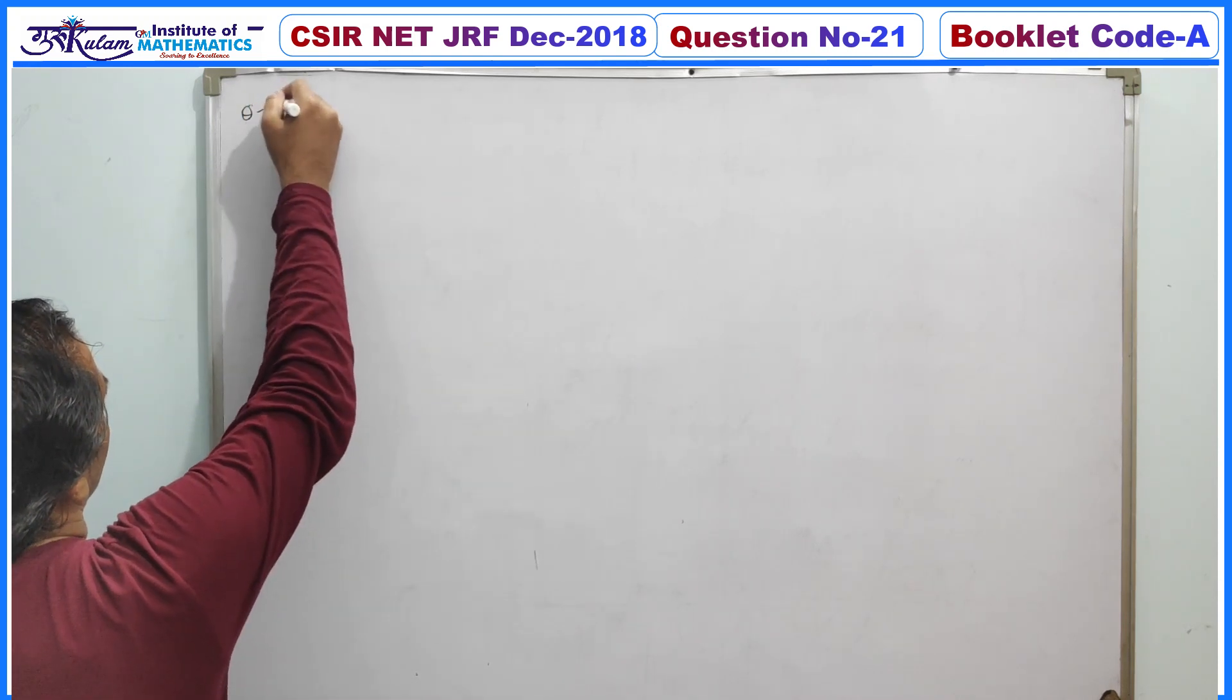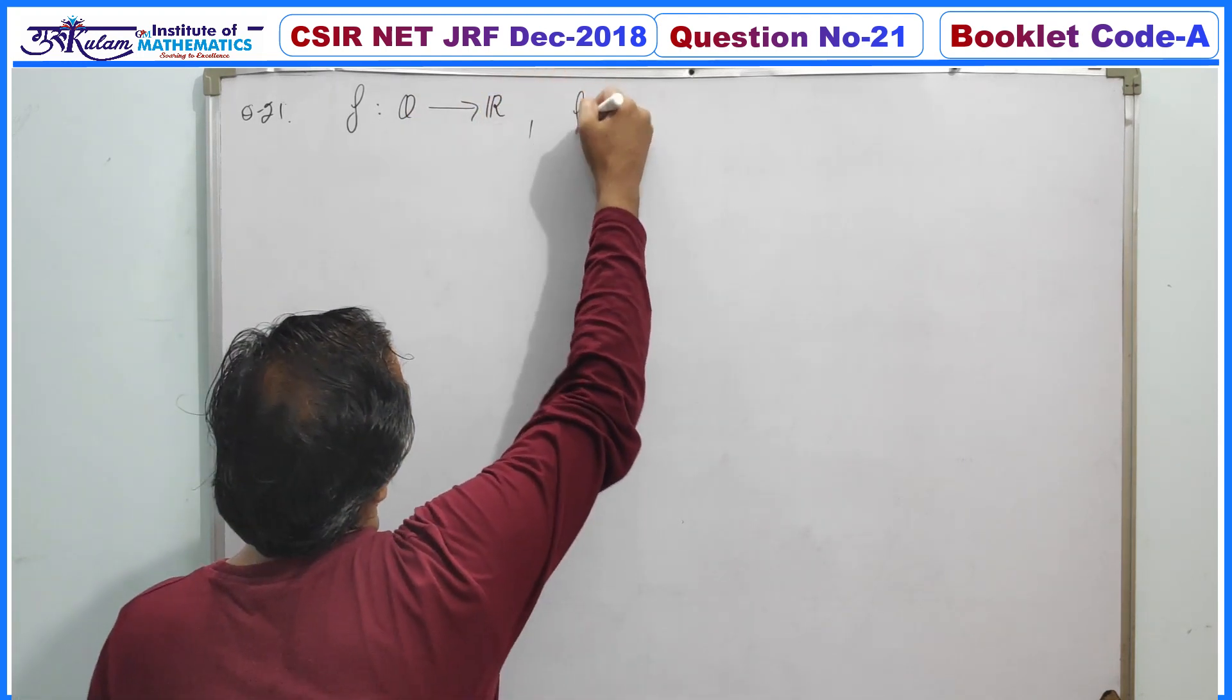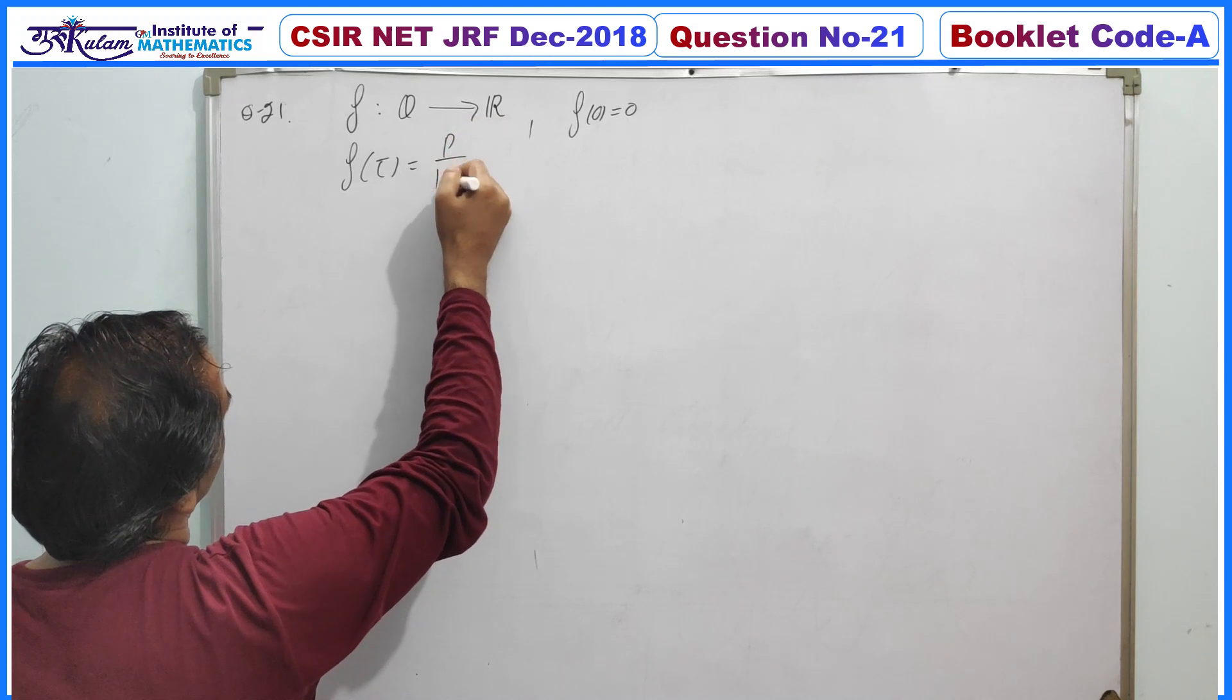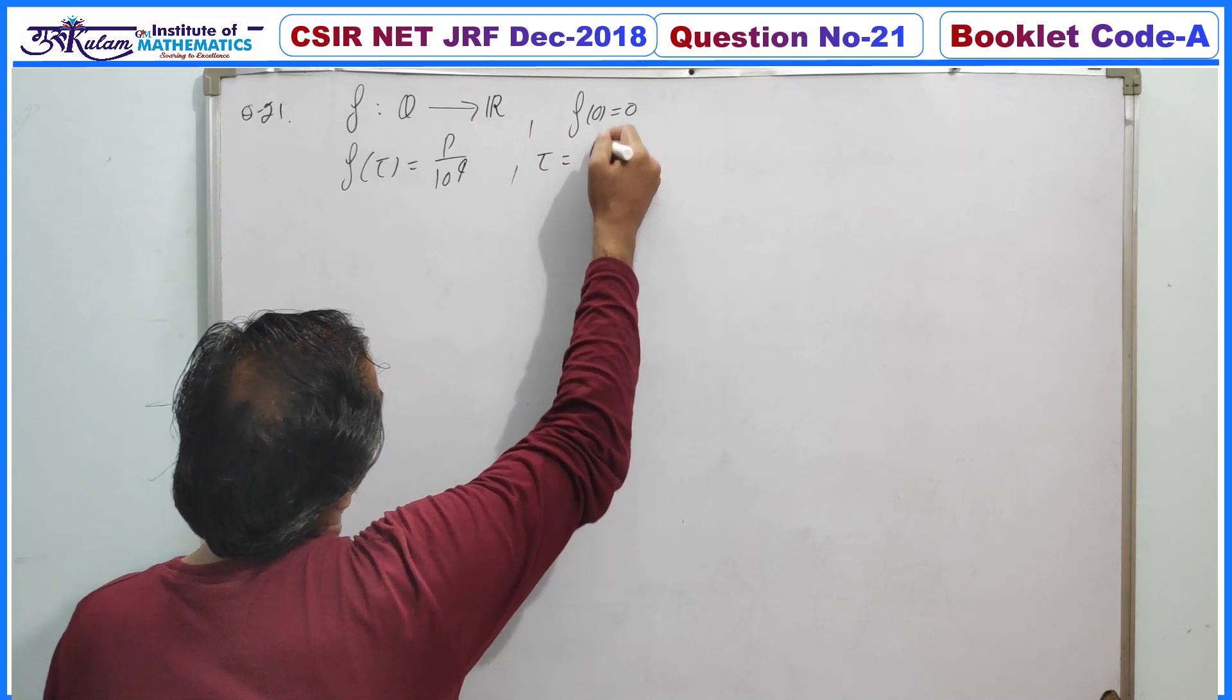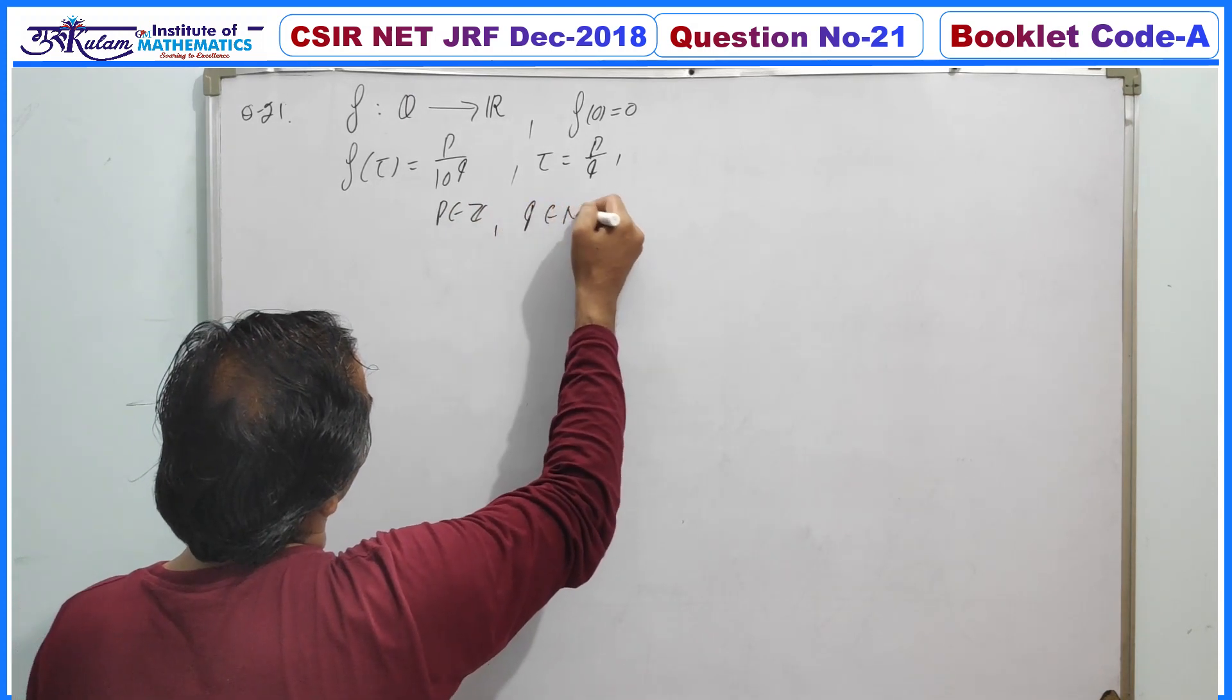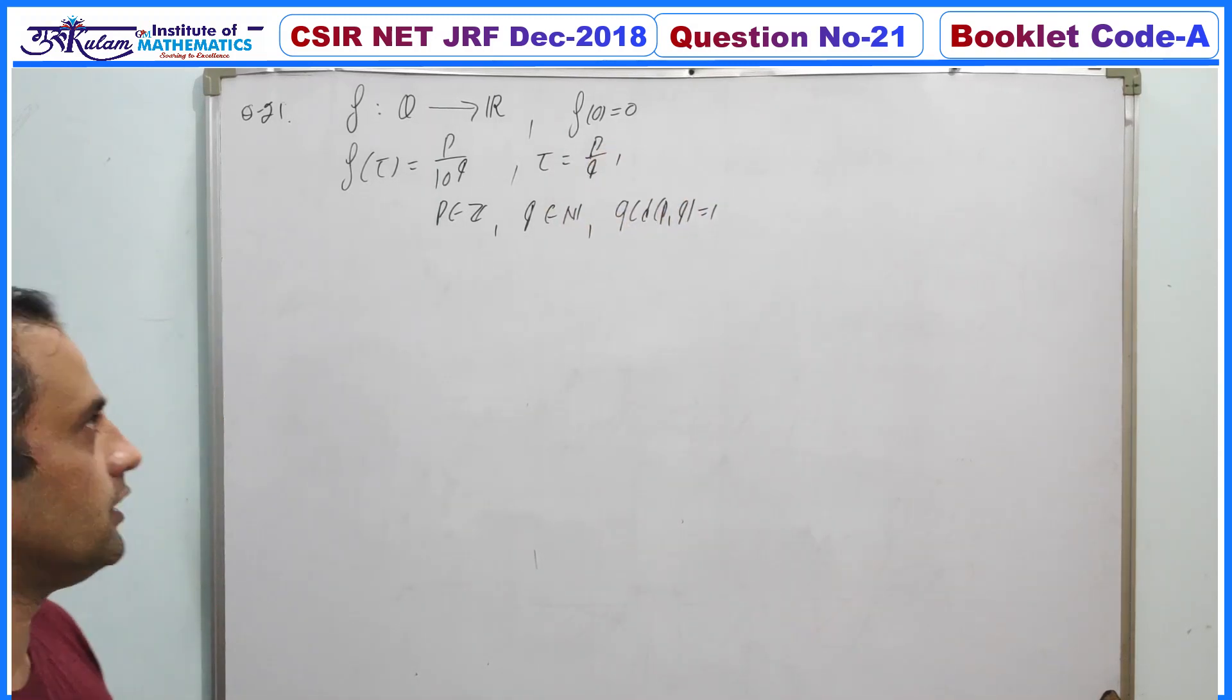The question is: f is a function defined from rational numbers to the real line such that f(0) equals 0 and f(τ) equals p upon 10 to the power q, where τ equals p by q. Here p is an integer, q belongs to natural numbers, and gcd of p and q is 1. Basically p by q must be a rational number.